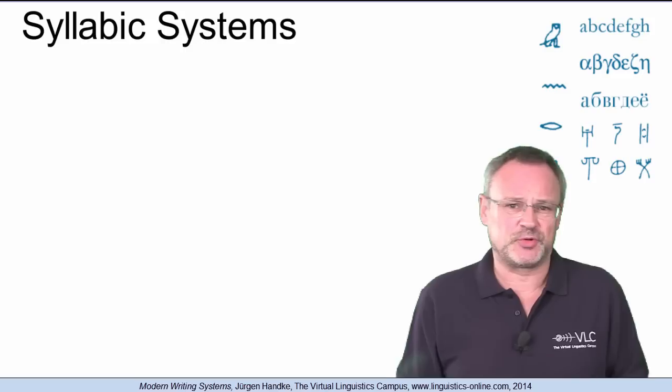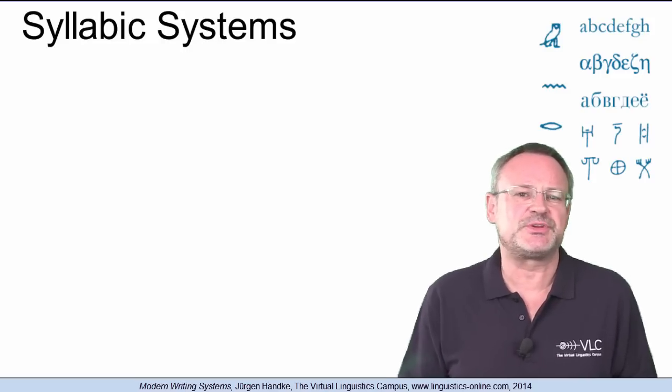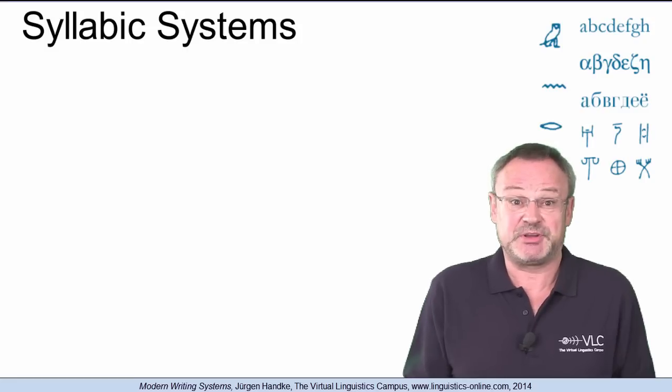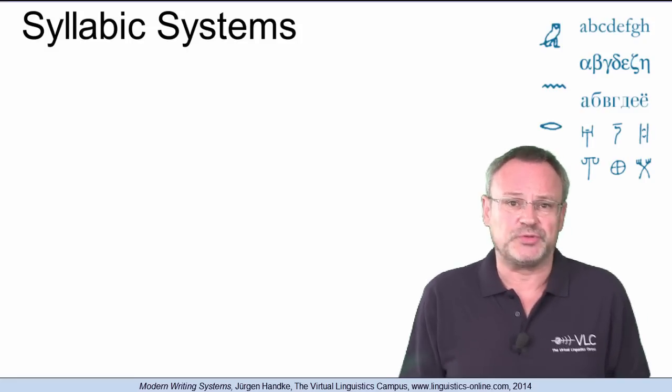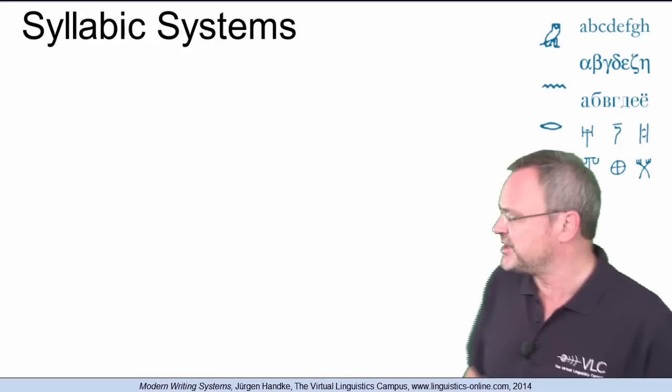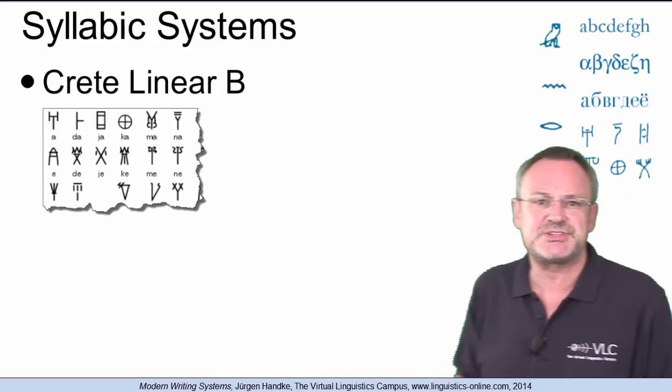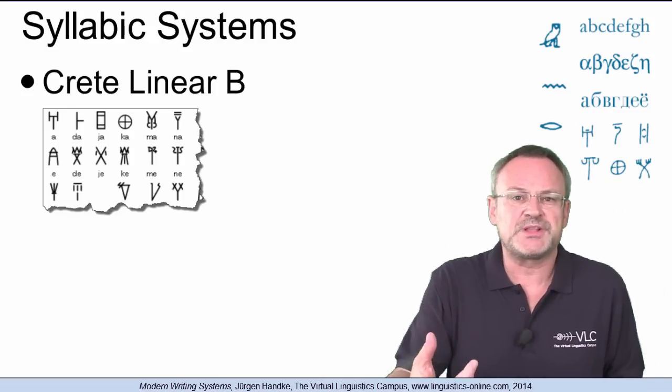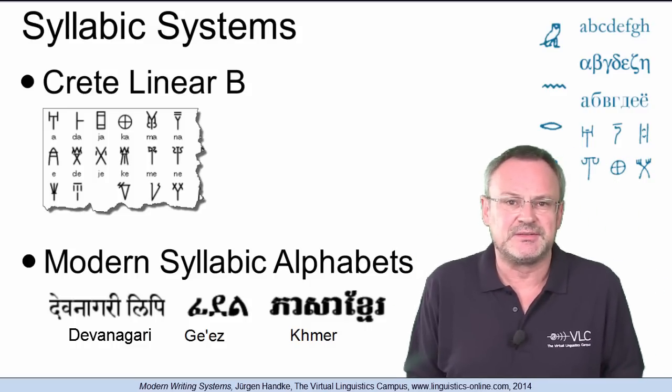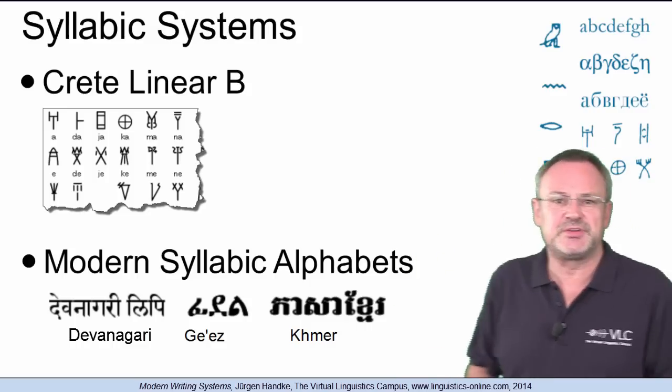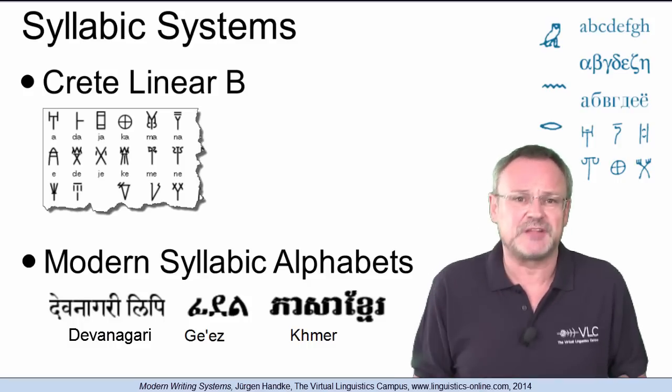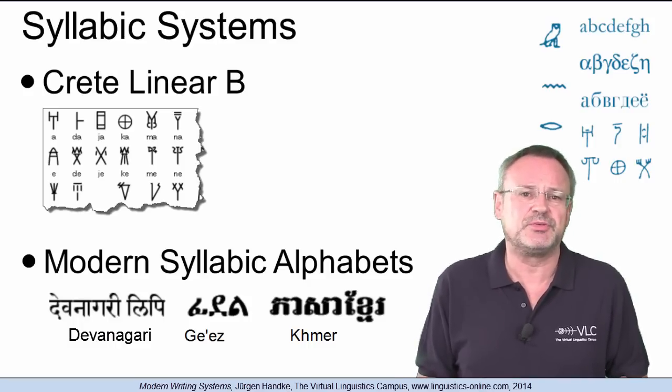The syllabic phonographic writing system represents the pronunciation of entire syllables by specific symbols. Syllabic writing systems are relatively old. One of the oldest syllabic writing systems is the Crete Linear B system. More modern ones are, for example, the Devanagiri alphabet used in Hindi, the GS alphabet used in languages spoken in Ethiopia, or the Khmer alphabet used in Cambodian.